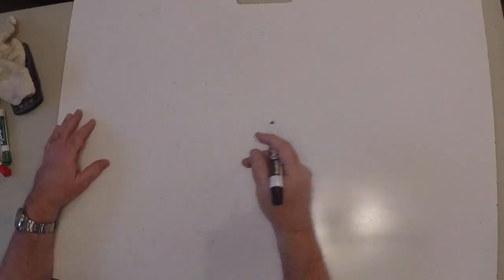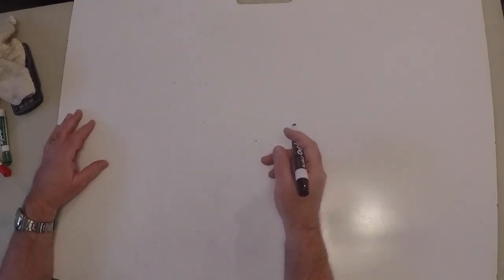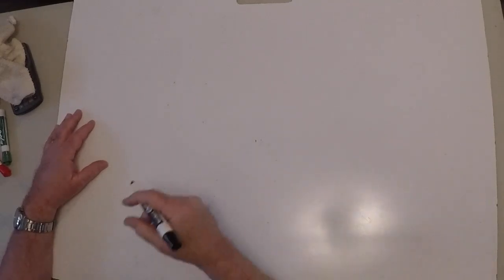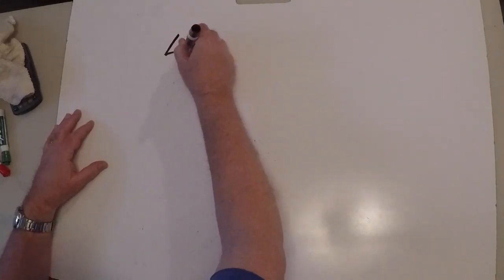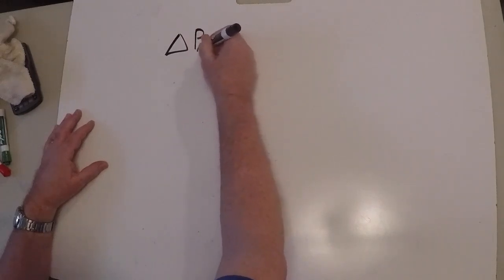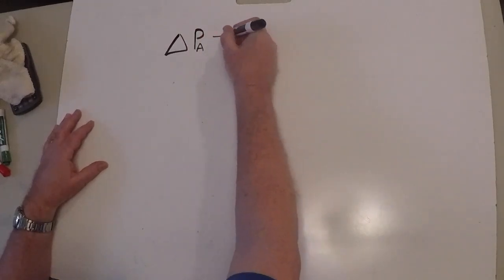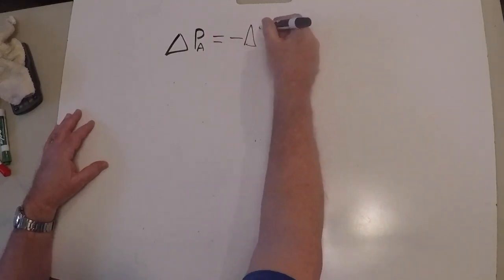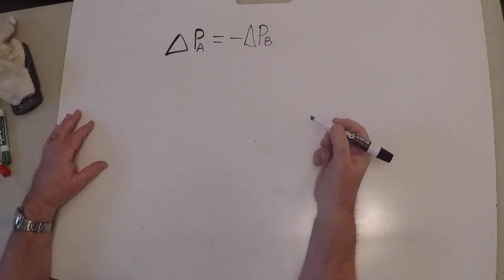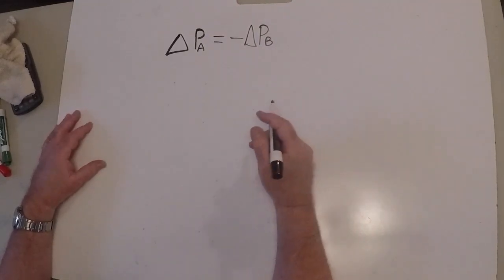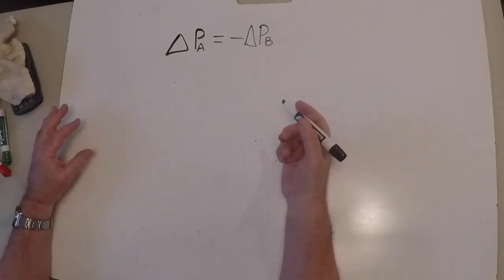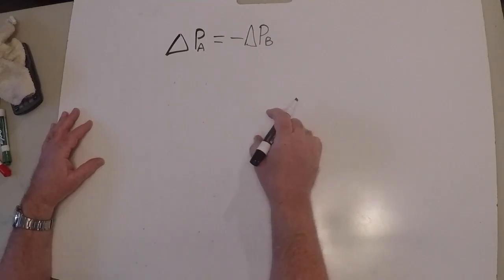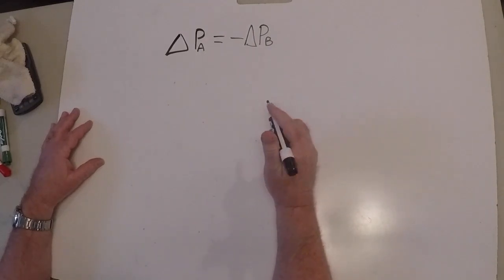So we found in our lab we had two carts, two objects, colliding with each other. We looked at how their momentums changed as a result of their colliding. What we found was that if one of the carts — call it cart A — if its momentum changed, that was equal to the opposite of the change in momentum of cart B. Basically, when the two carts collide, one gains momentum and the other loses it. And this is true not just of carts in labs, but of all objects — their changes in momentum are opposite.